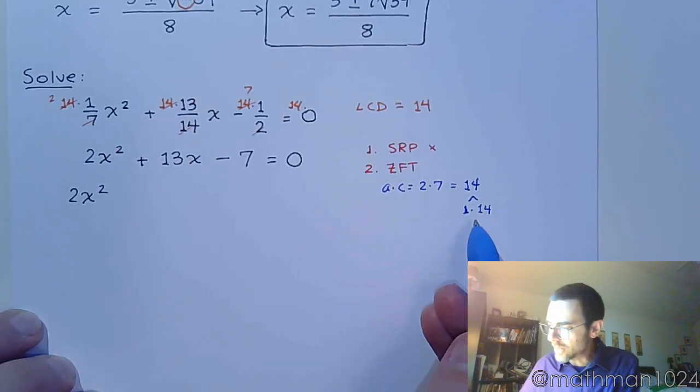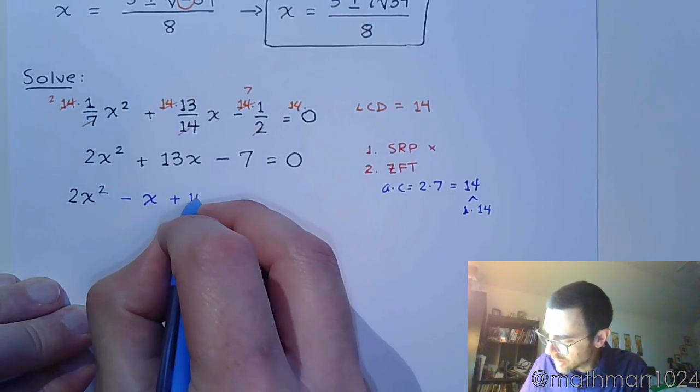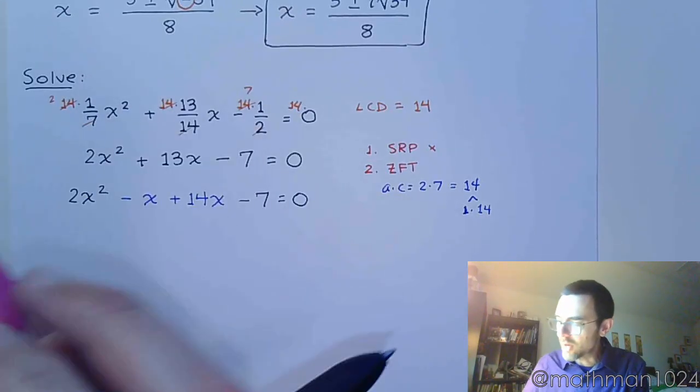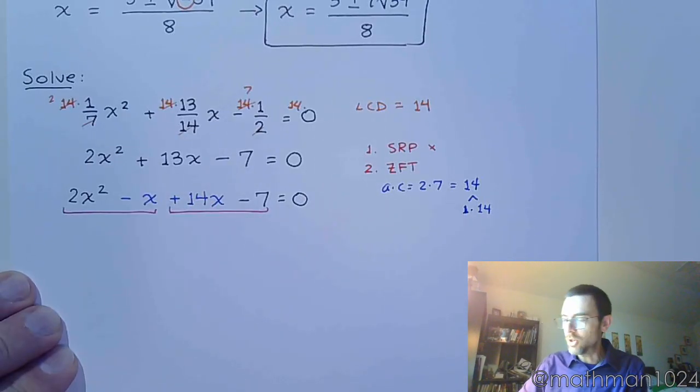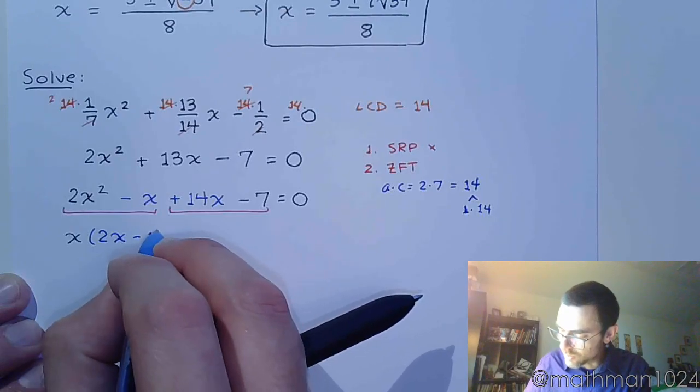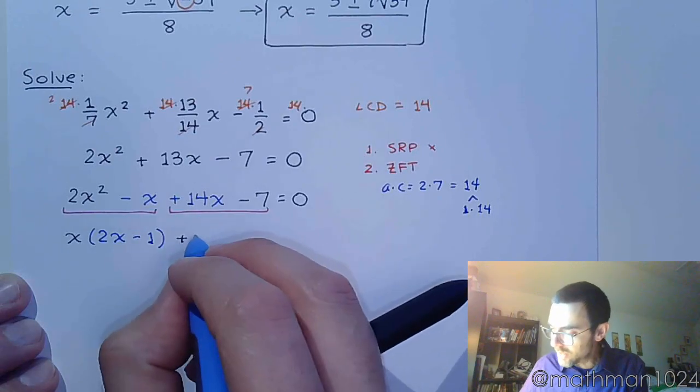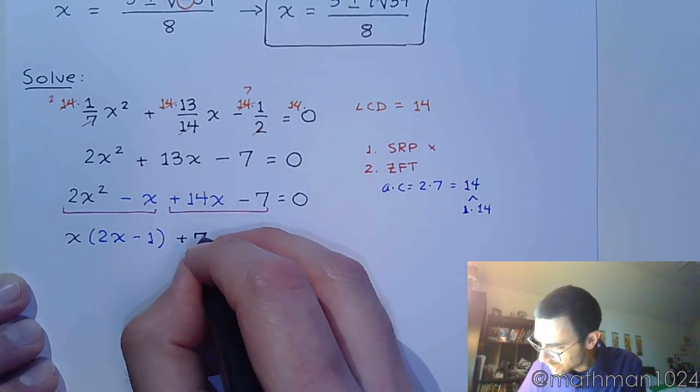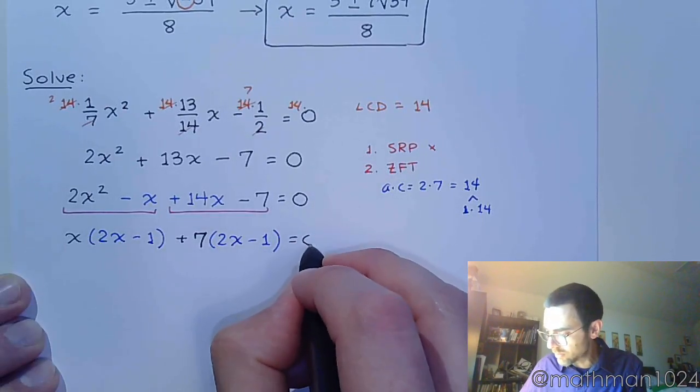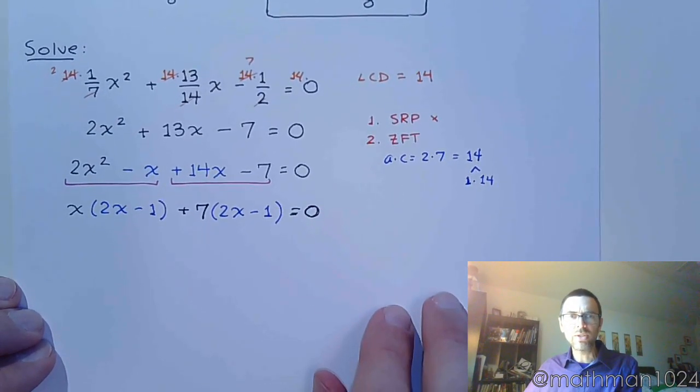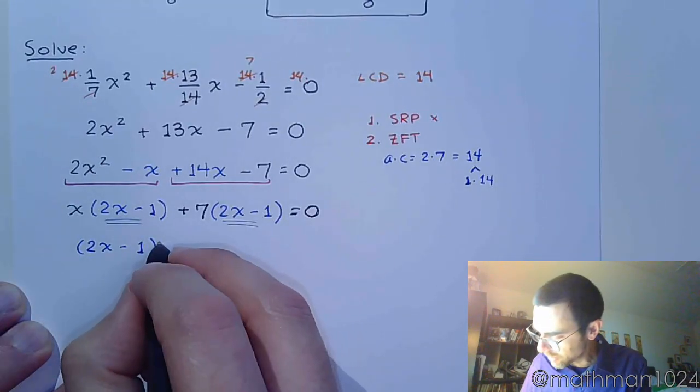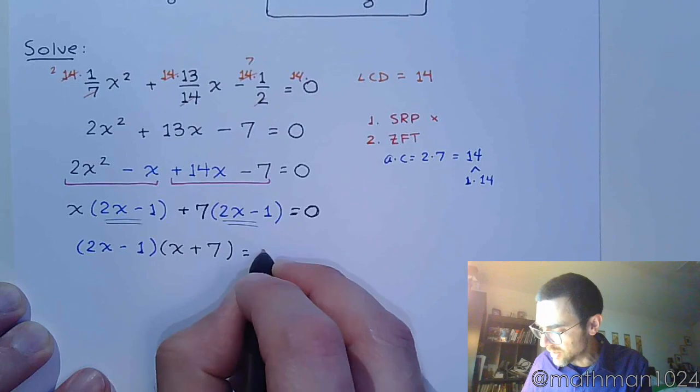So let's factor this. So 2x squared, and knowing the correct signs here, I'm going to have minus 1x and plus 14x. And then it's just a matter of finishing the factoring by grouping. If this is the way you like to do it, or maybe you kind of want to do a guess and check, that works too. So x is the common factor, and we're left with 2x minus 1. Plus, in the second group, you have a common factor of 7. Factor that out, and I've got 2x minus 1. And now we can finish this factoring by grouping because 2x minus 1 is exactly the same. So 2x minus 1 times x plus 7 is equal to 0.